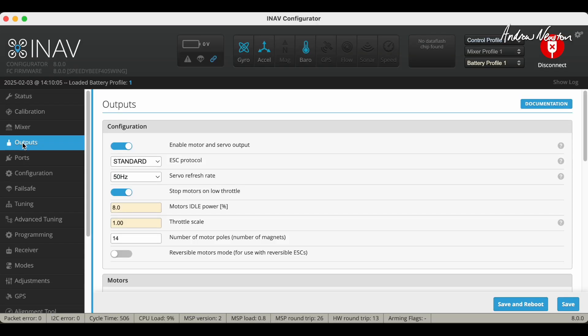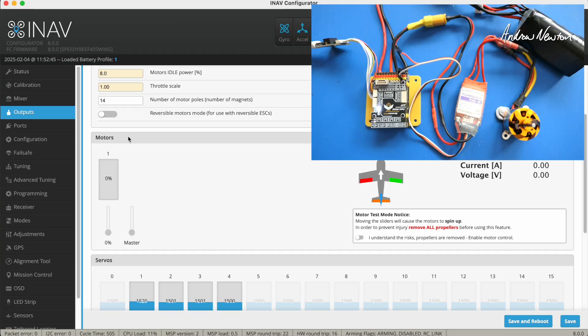Now if we go to the outputs page, there's this tick item here: enable motor and servo output. If you don't have that turned on then the motor and servos are not going to work, so remember to tick that in the outputs page.